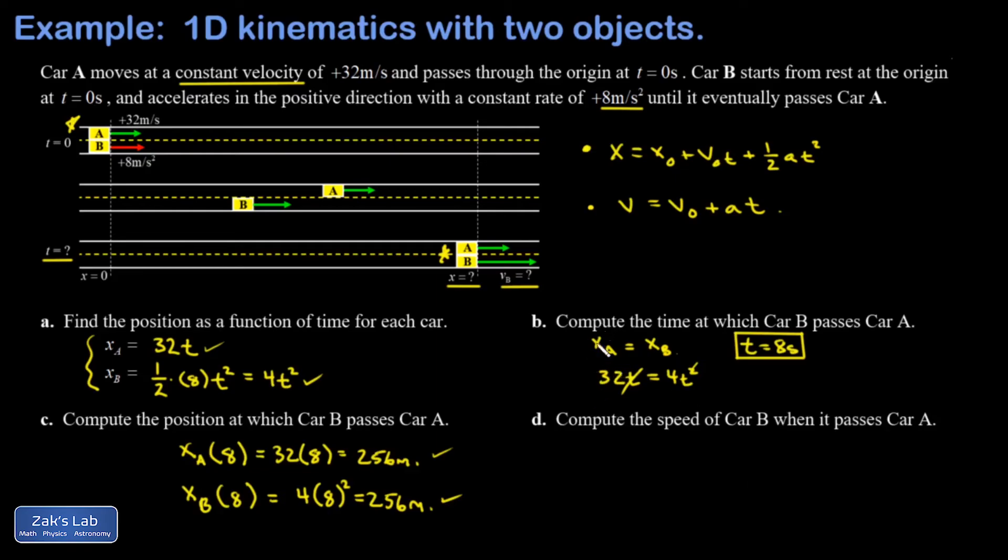Finally, we're asked to compute the speed of car B when it passes car A. So this is where we use the second basic kinematics formula: v equals v naught plus a t. I subscripted all those quantities with a B because that's the car we're talking about.